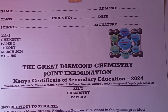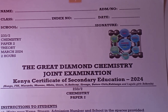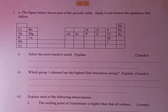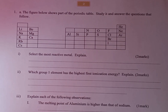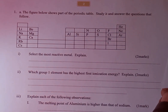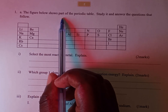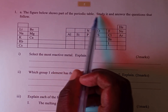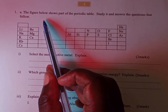Welcome to our discussions. We are presenting a question from the Great Diamond Chemistry Joint Examinations. The first question is on the periodic table. The question reads: the figure below shows part of the periodic table — study it and answer the questions that follow.